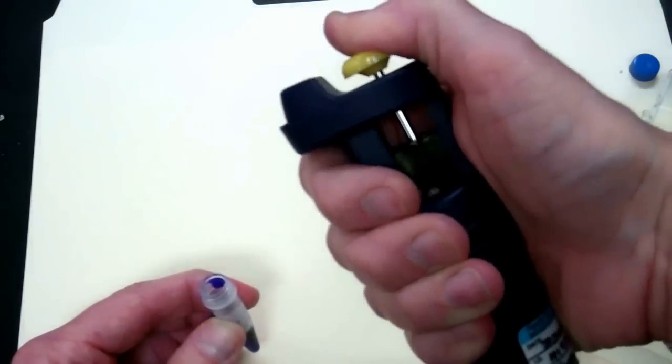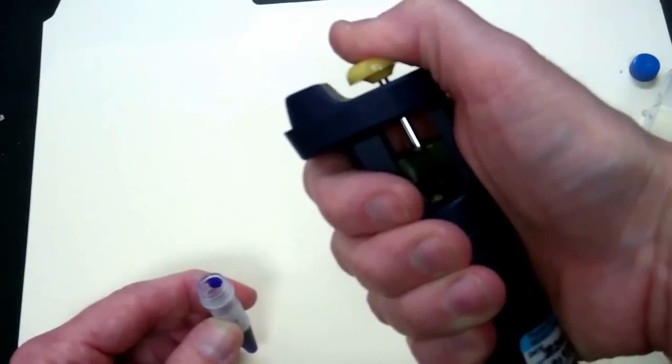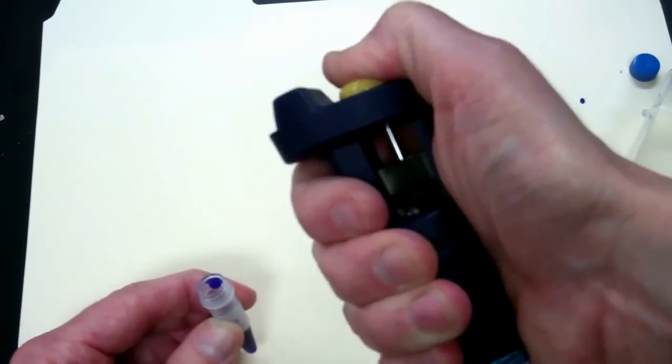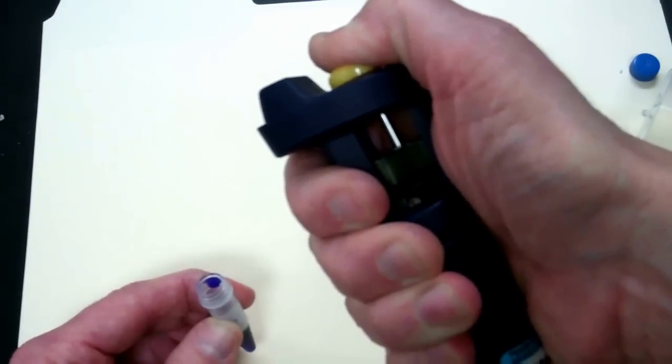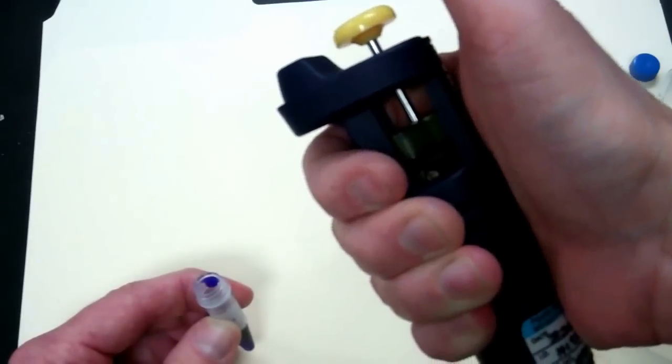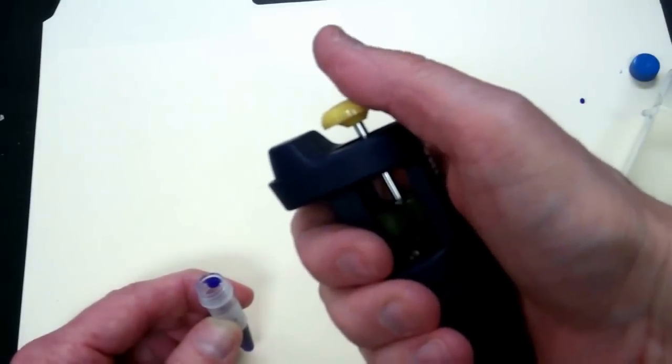So when you use the micropipette, when you press the button you'll feel some resistance, and if you continue pressing you go to the second stop. Second stop is all the way down as far as you can push, and then you bring it back up and release it. So what we want to do is press to that first stop.